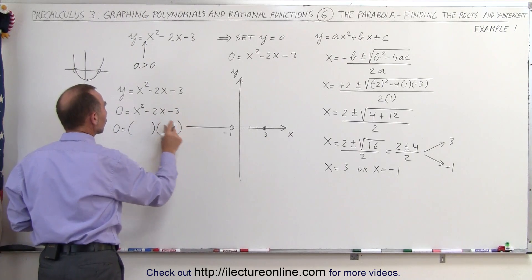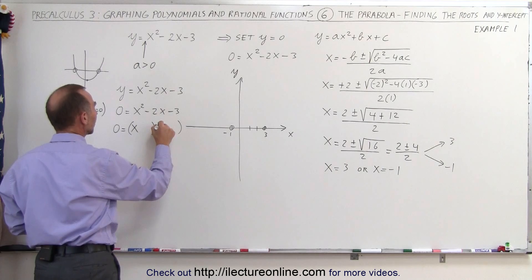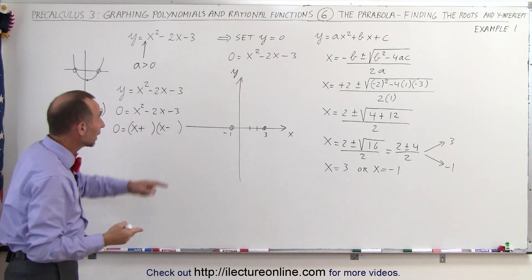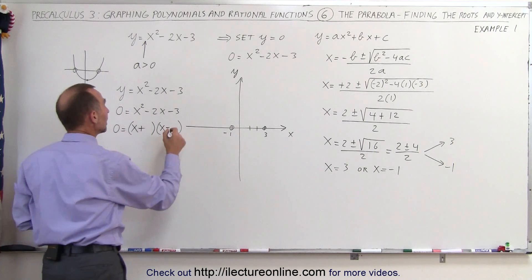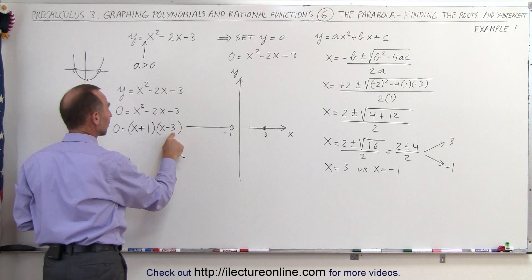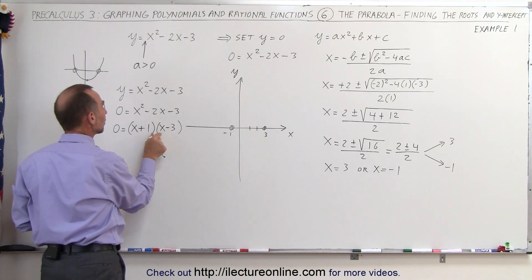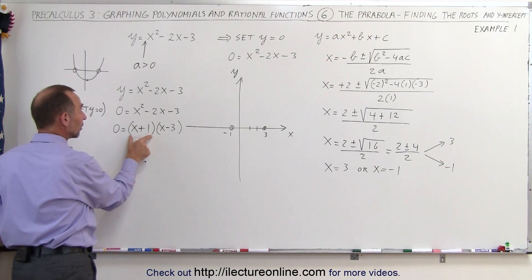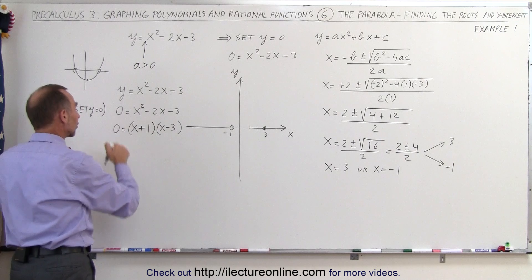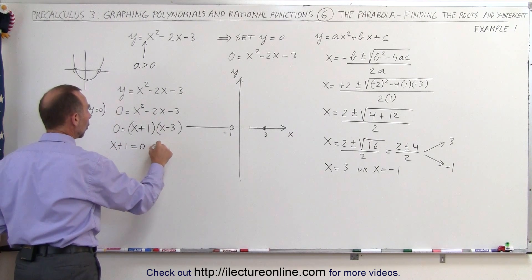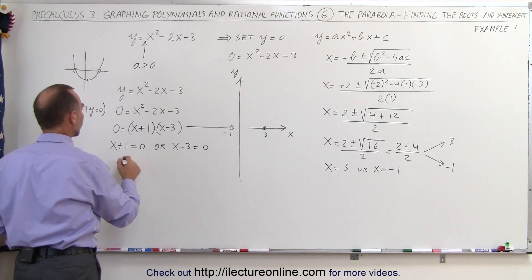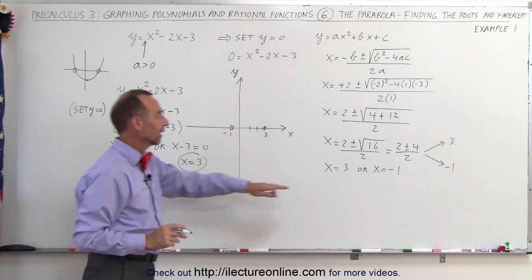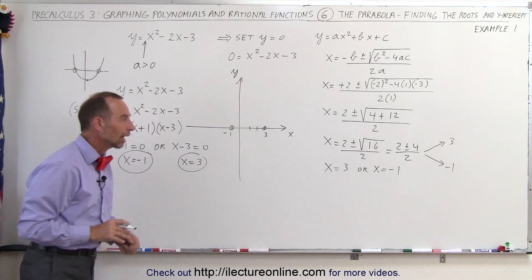0 is equal to — can we turn this into the product of two binomials? We need an x and an x. Since the constant is negative 3, one factor is positive and one is negative. The two numbers multiplied together give negative 3, and when added give negative 2, which means we need negative 3 and positive 1: x times negative 3 is negative 3x, x times 1 is plus 1x, and negative 3 plus 1 gives negative 2x — the correct factoring. So 0 equals (x plus 1)(x minus 3), meaning either x plus 1 equals 0 or x minus 3 equals 0, giving x equals negative 1 or x equals 3 — exactly the same two roots we found with the quadratic formula.